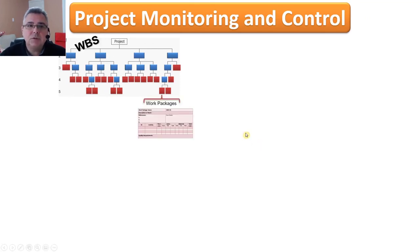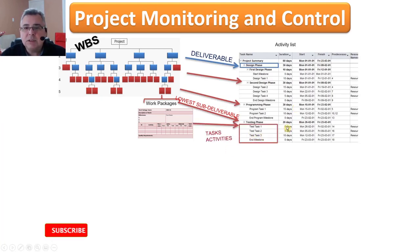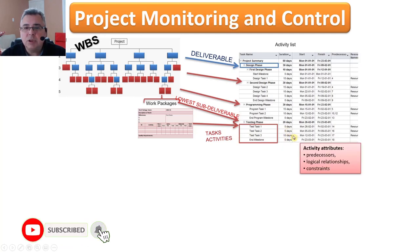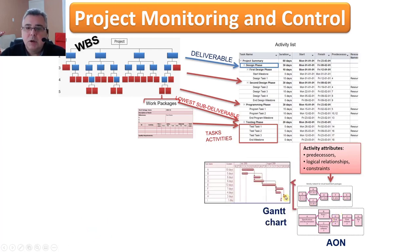WBS, lowest level subdeliverable, work package, then we move those deliverables, subdeliverables, activities to MS project, prepare the activity list, estimate the duration, identify predecessors, then we move to the project network,